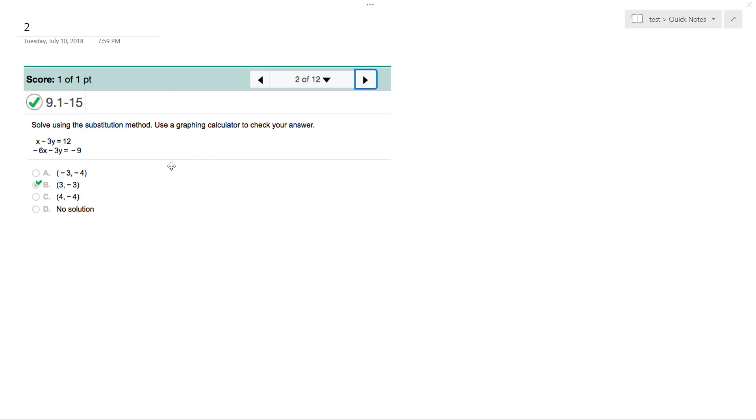I want to solve the following using substitution. So what I'm going to do is, there's many ways you can go about this. I'm going to set up so x is going to be equal to 3y plus 12. I simply moved 3y over, I added 3y to both sides. So now what I can do is substitute this into the second equation.